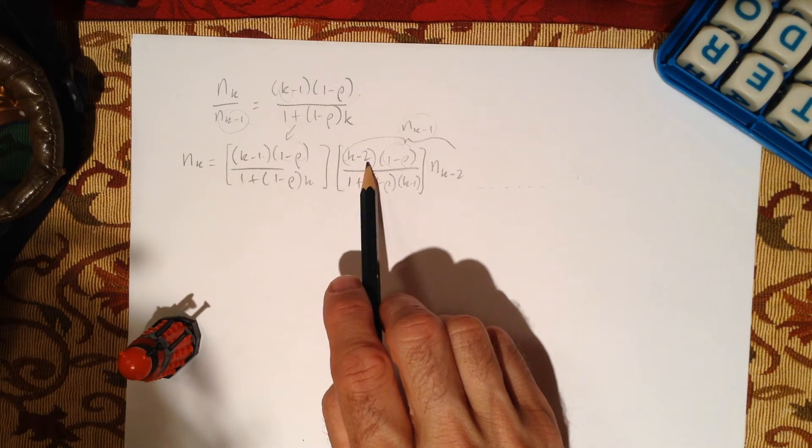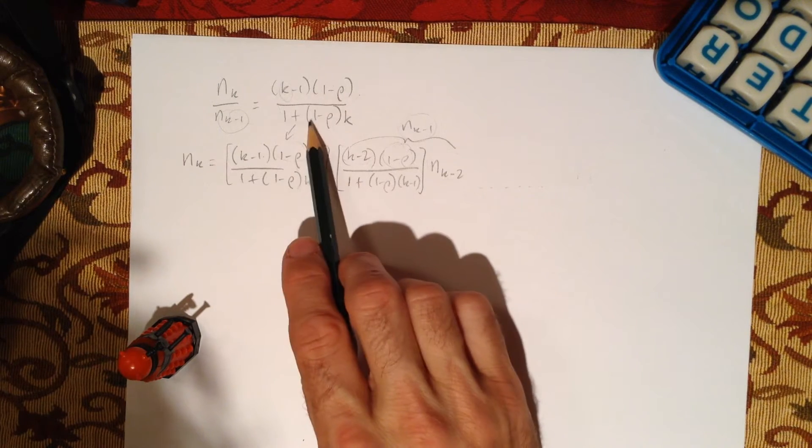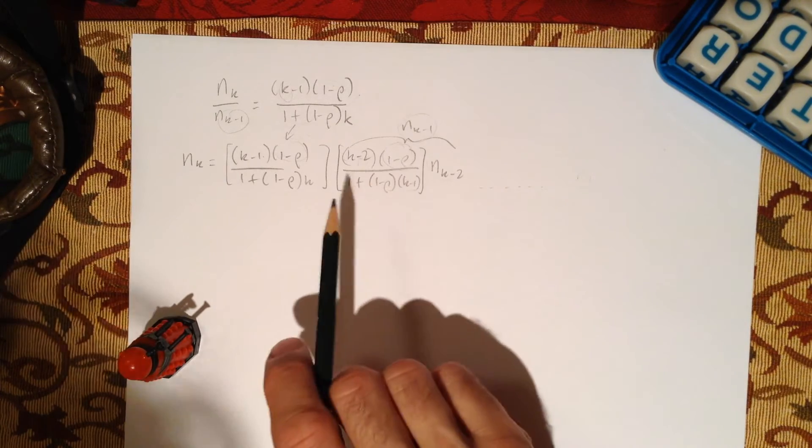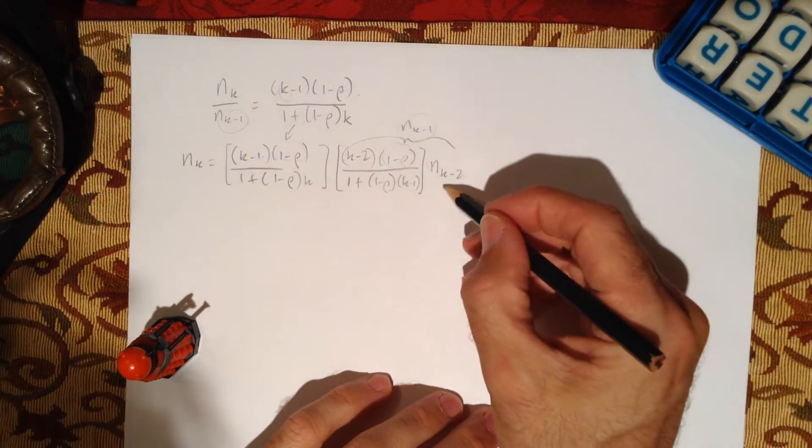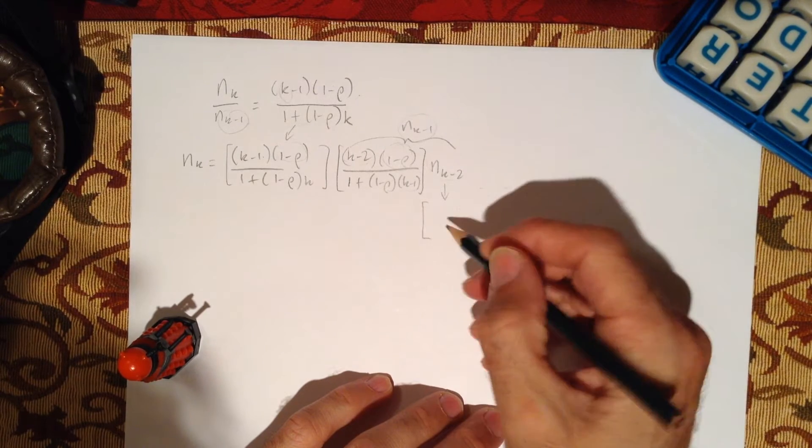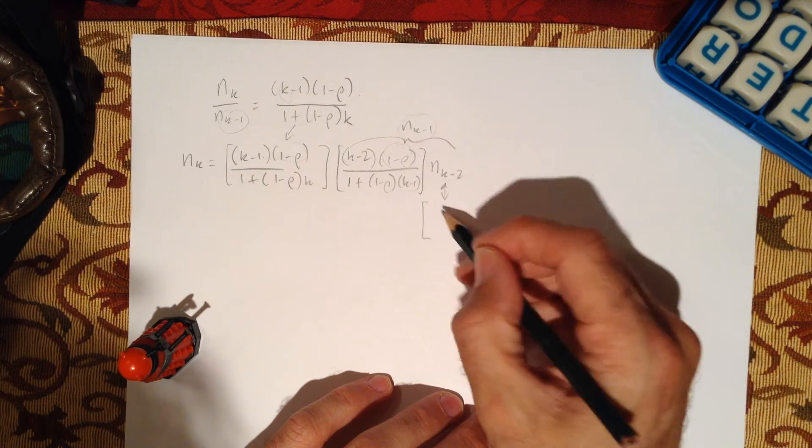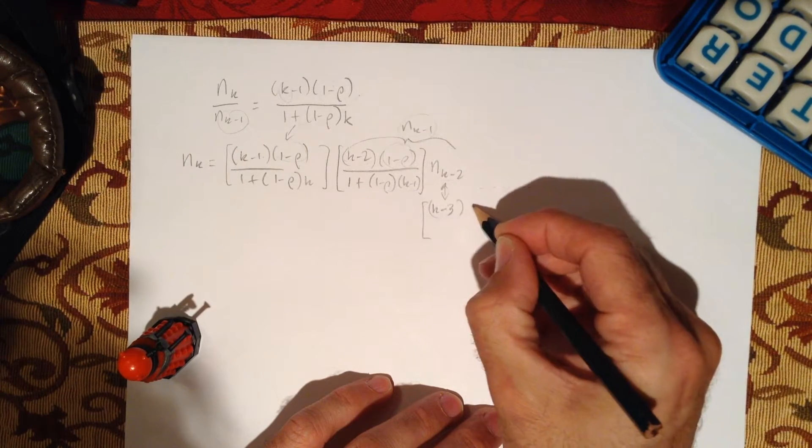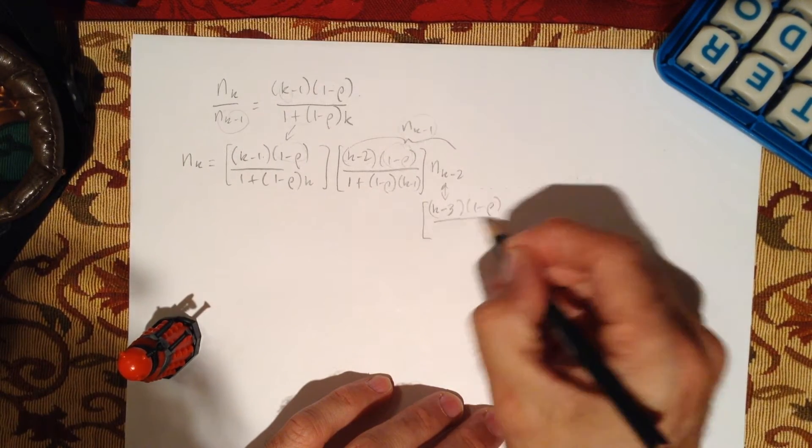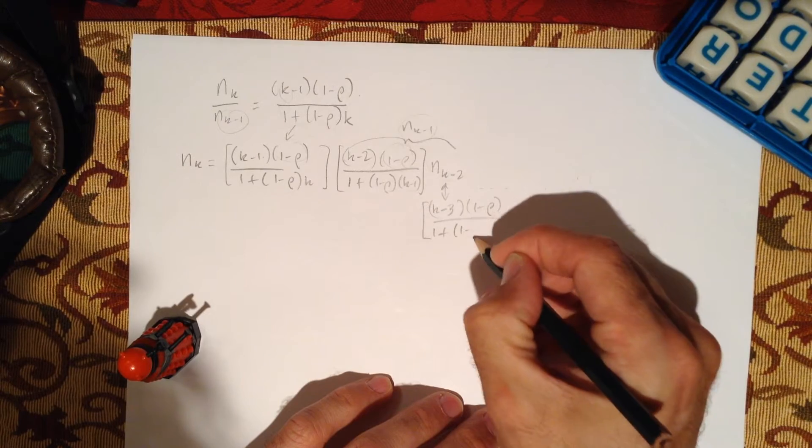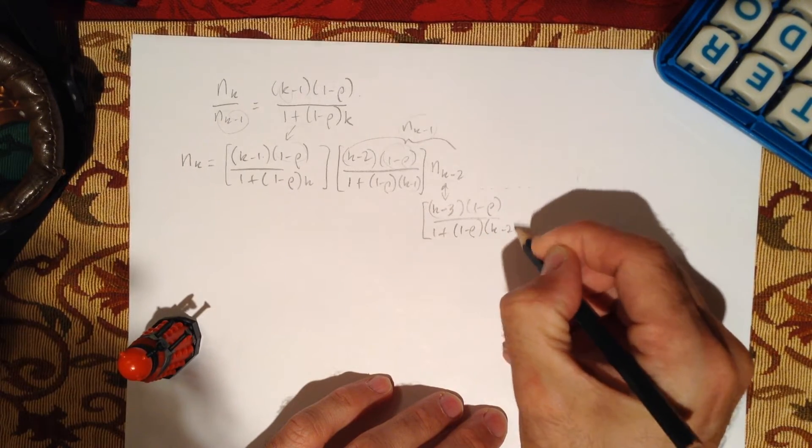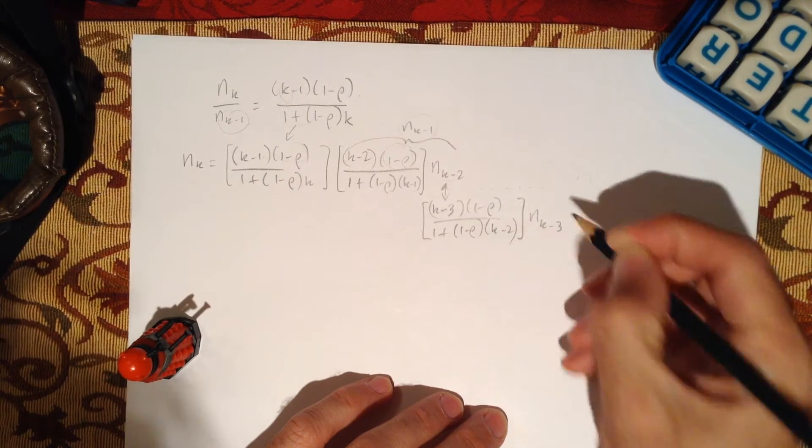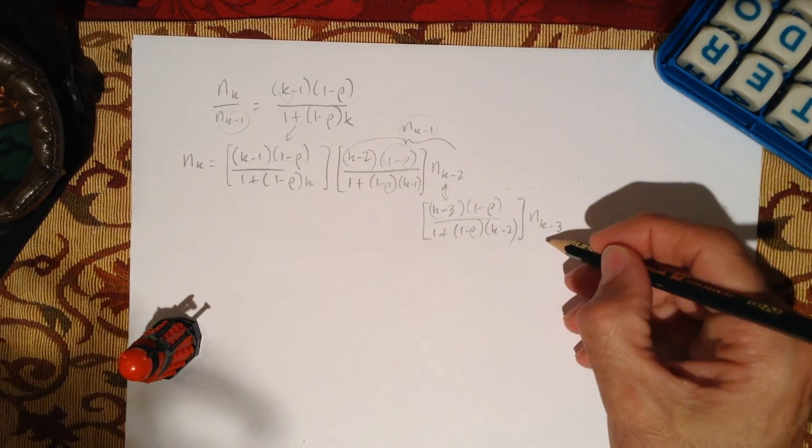So this becomes k minus 2 here. There's 1 minus rho over 1 plus 1 minus rho times k minus 1. Then we'd replace this guy with what it is in terms of k minus 3. We're going to have k minus 3, 1 minus rho over 1 plus 1 minus rho, and then this is k minus 2. That's going to be nk minus 3, and we replace this guy all the way down.